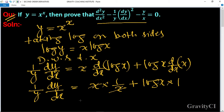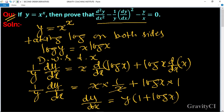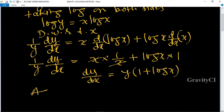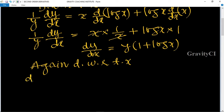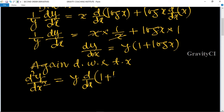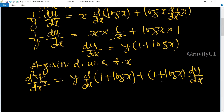Here x and x cancel, so dy upon dx equals y into (1 plus log x). Now again differentiate with respect to x. So d squared y upon dx squared equals y into differentiation of (1 plus log x), plus (1 plus log x) into dy upon dx.